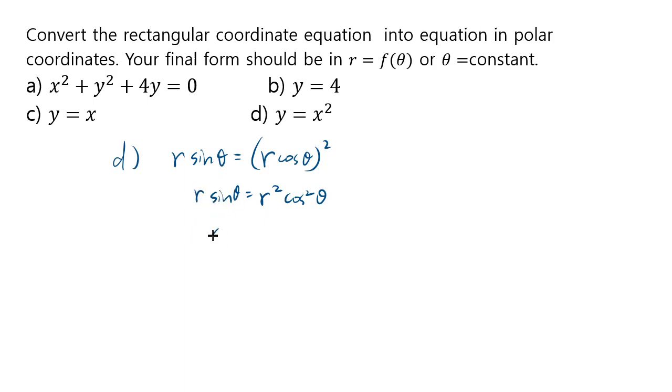Divide by r, you get sine theta equals to r cosine squared theta. And then because our goal is to solve for r, r must be sine theta divided by cosine squared of theta.